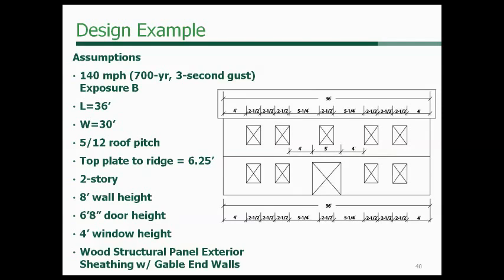Let's go through a design example using our WFCM house. The assumptions are: 140 mph Exposure B zone, building length 36 feet, width 30 feet, roof pitch 5-in-12, height from top plate to ridge of 6.25 feet, two stories with 8-foot wall heights, door heights of 6 feet 8 inches, window height of 4 feet, window width of 2.5 feet, exterior sheathing of wood structural panels, and gable end walls.